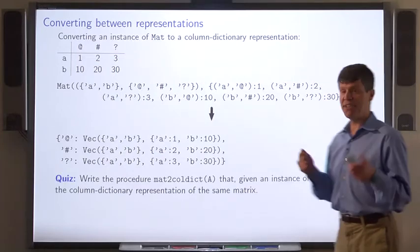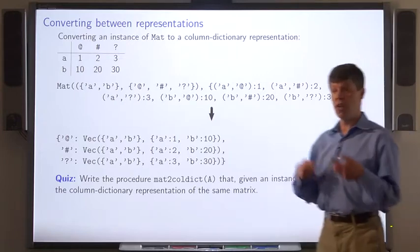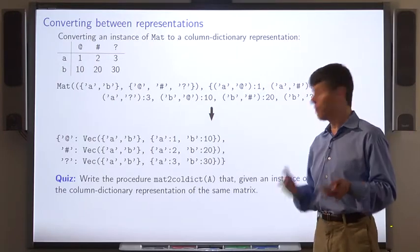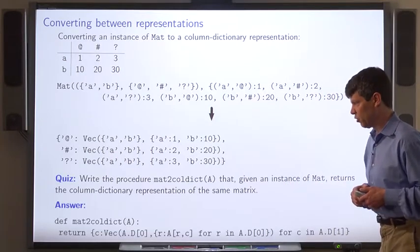Now, let's look at converting an instance of MAT to a column dictionary. Here's an example of an instance of MAT. And here's the corresponding column dictionary. Write the procedure MAT to CALDIC that, given an instance of MAT, returns the column dictionary representation of the same matrix.